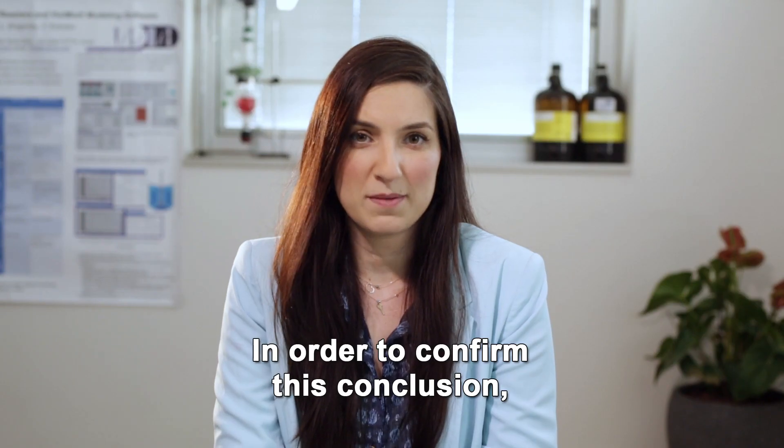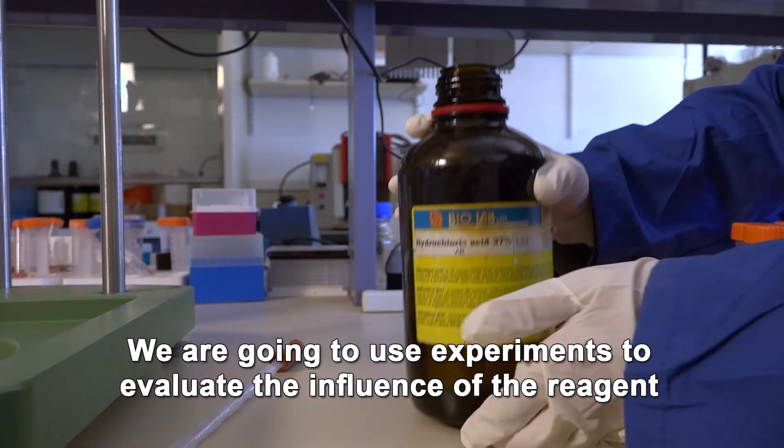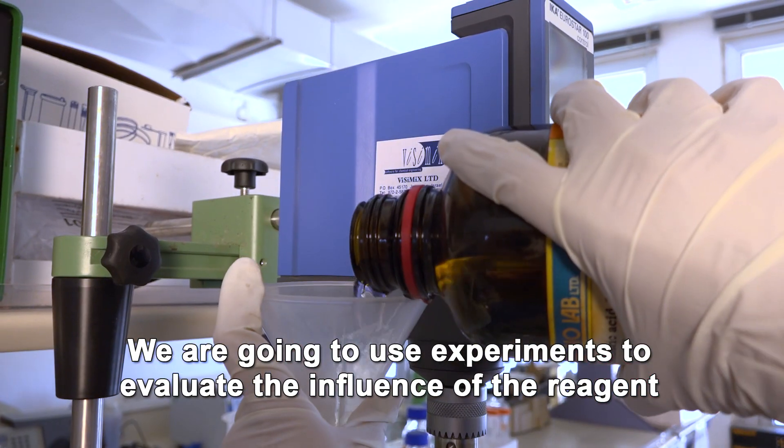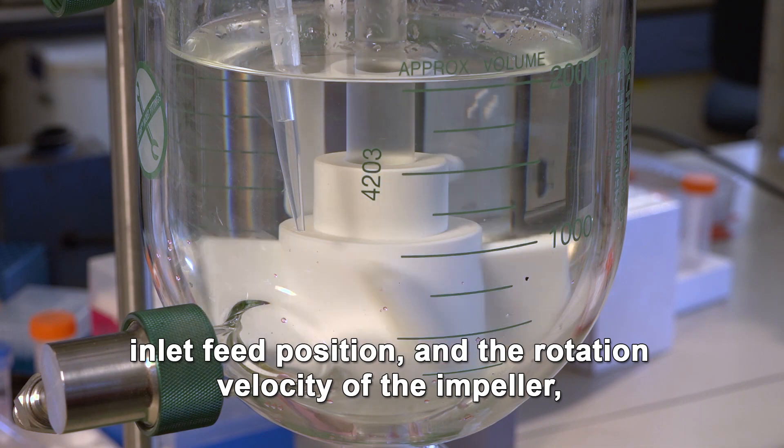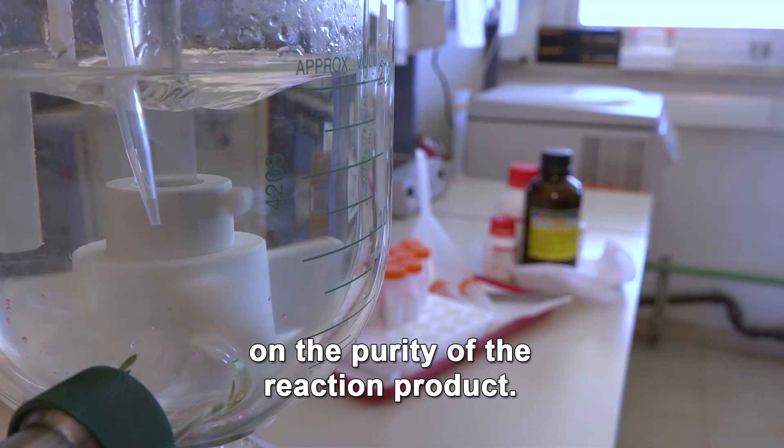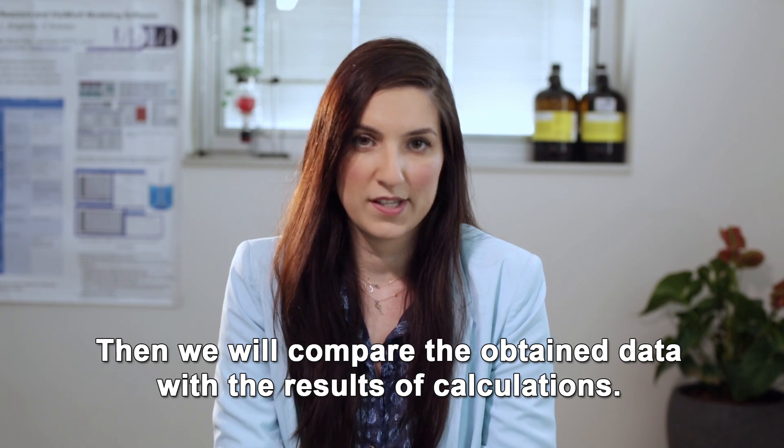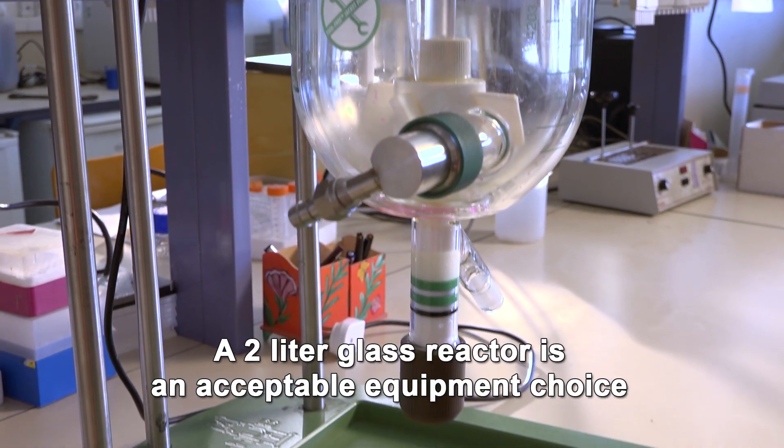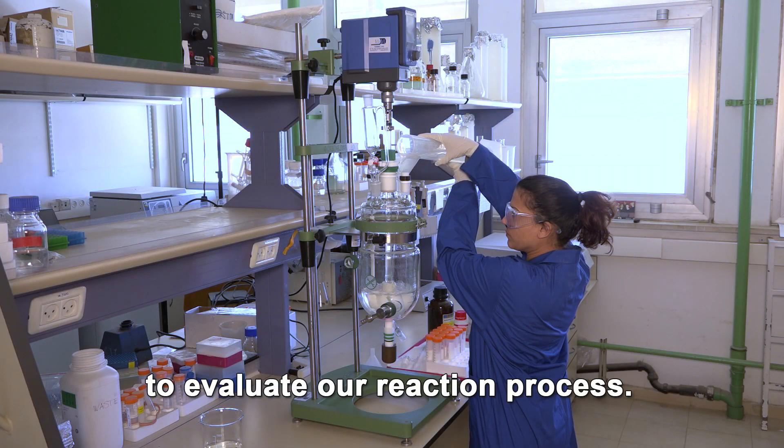In order to confirm this conclusion, let's perform some evaluations in our lab equipment. We're going to use experiments to evaluate the influence of the reagent inlet feed position and the rotation velocity of the impeller on the purity of the reaction product. Then, we will compare the obtained data with the results of calculations. A 2L glass reactor is an acceptable equipment choice to evaluate our reaction process.